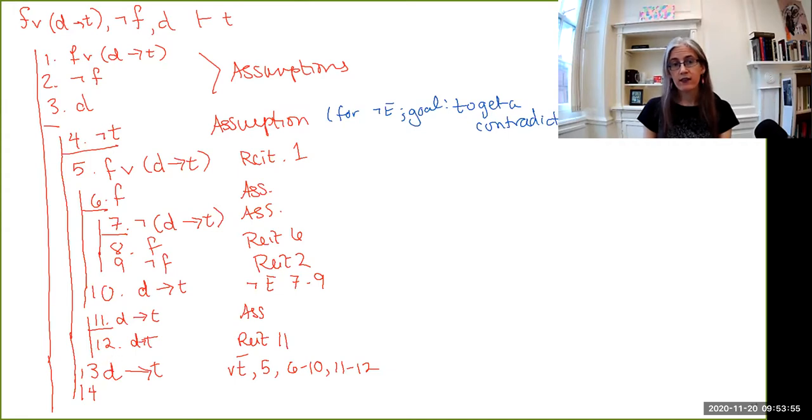This is the antecedent of the conditional that D implies T. So conditional elimination applied to lines three and thirteen allows us to get T. But T itself contradicts our assumption of not T up here at line four. So our goal was to get a contradiction. Now, it could be with any arbitrary formula, but it's also perfectly all right to contradict the own assumption that you started with.